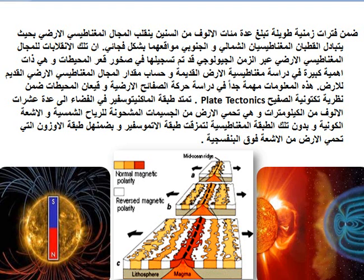The magnetosphere extends many tens of thousands of kilometers towards Earth's outer space, protecting its surface from cosmic rays and the charged particles of solar wind. Without the existence of Earth's magnetic field, the atmosphere, including the ozone layer, would be destroyed, and they would no longer protect Earth's surface from harmful radiation.